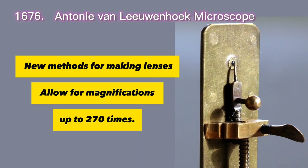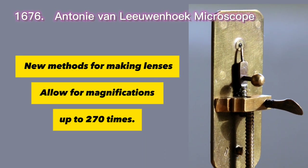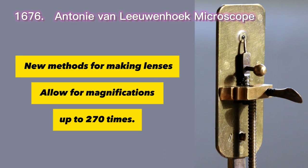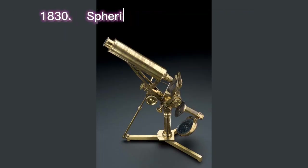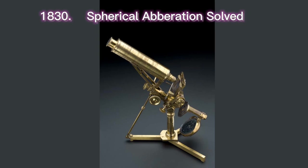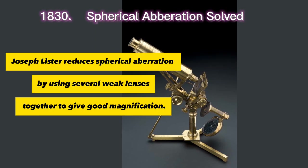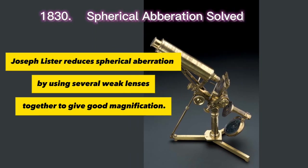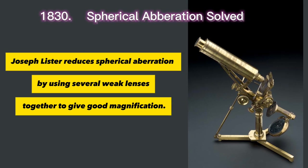In 1676, Antony van Leeuwenhoek invented new methods for making lenses that allowed magnifications of up to 270 times. By 1830, Joseph Lister solved spherical aberration by using several weak lenses together to achieve good magnification.